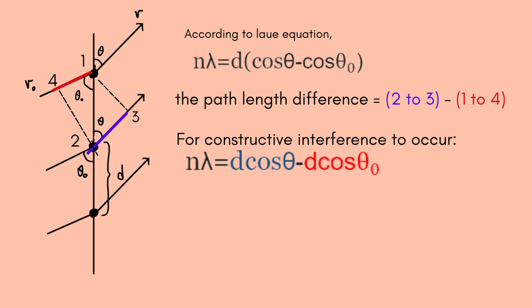Hence we can write down an expression. n is going to be an integer times the wavelength, and it is going to be equal to the vector 2 to 3 which is just d, the distance between the scatterers which is the hypotenuse of the right triangle times the cosine of theta naught.